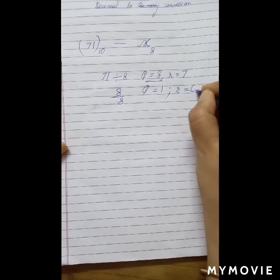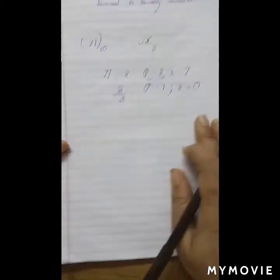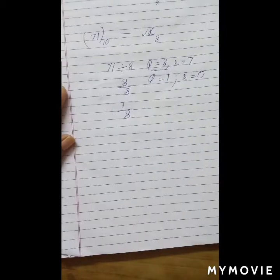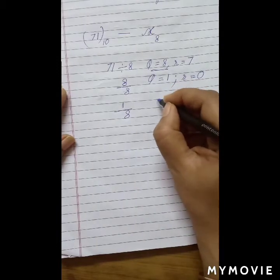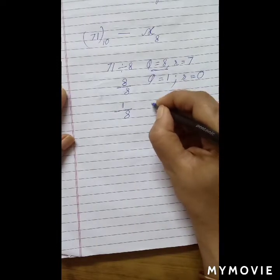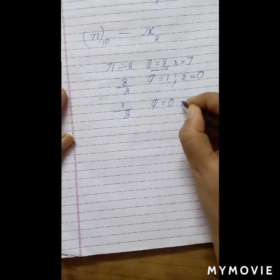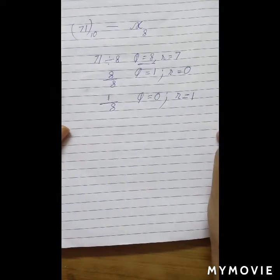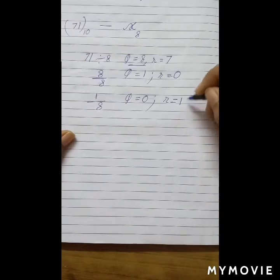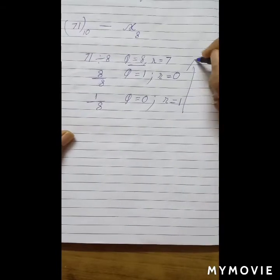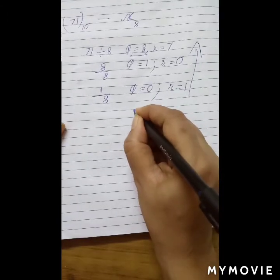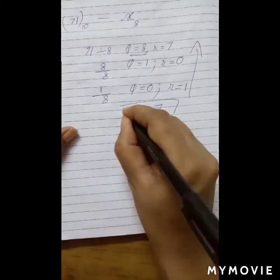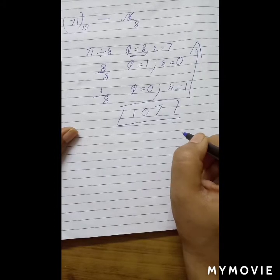If we divide 8 by 8, we get the quotient as 1 and the remainder is 0. Now we have the quotient 1, so we divide it by 8 again. This time, 8 goes into 1 zero times, so the quotient is 0 and the remainder is 1. Our number in the octal system is read in this direction, giving us 107.